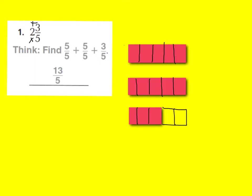Here's a picture of what 2 and 3 fifths could look like. You can see that this whole is cut into 5 fifths, this whole is cut into 5 fifths, and then you have 3 fifths. So 2 groups of 5 fifths is 10 fifths, 11 fifths, 12 fifths, 13 fifths. Therefore, 2 and 3 fifths equals 13 fifths.